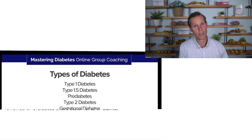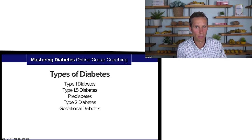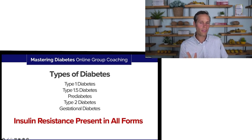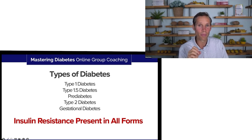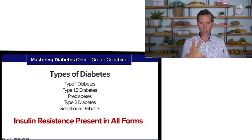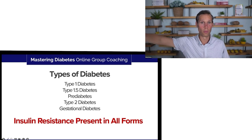Prediabetes — a lot of people are living with prediabetes and don't even know they have it. Type 2 is the most common; over 90% of all people diagnosed with diabetes have type 2. Gestational diabetes happens during pregnancy. The key thing is that insulin resistance can be present in all these forms. For prediabetes, type 2, and gestational diabetes, insulin resistance is the cause — a precursor. You cannot have any of those three conditions without some advanced form of insulin resistance.